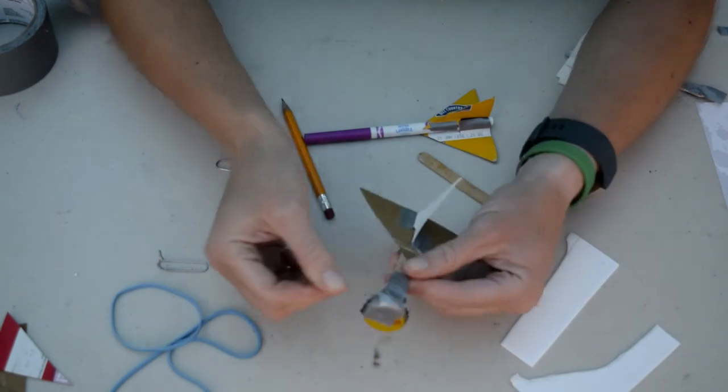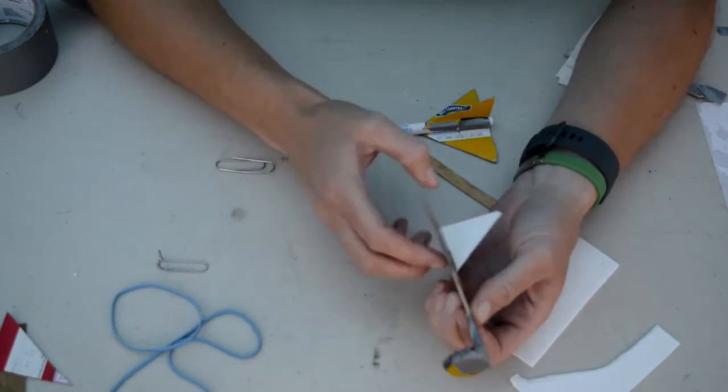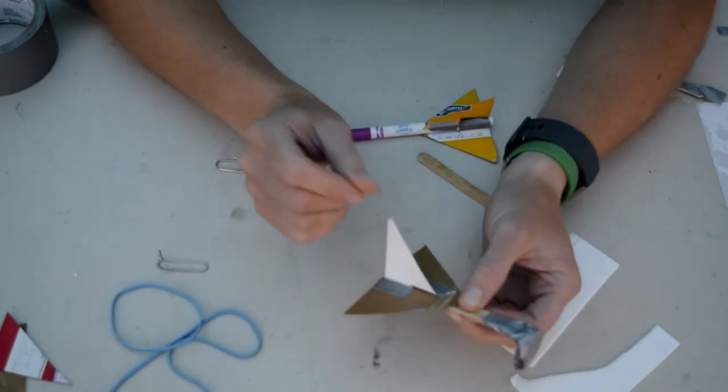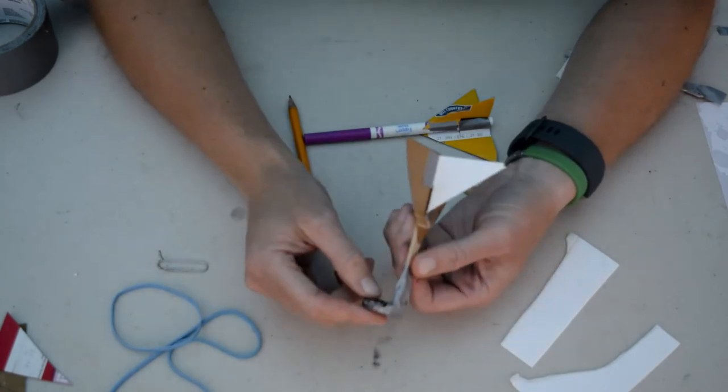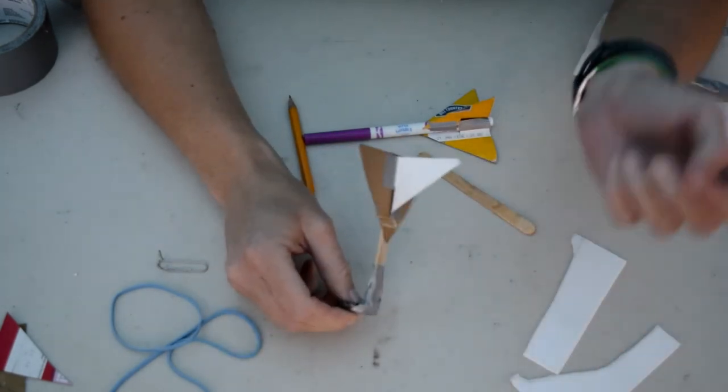So yeah, basically what you've created is the fuselage of the plane or the rocket. You've created some wings or fins for stabilizing, and then this hook is what's going to help us propel the plane off of the rubber band.